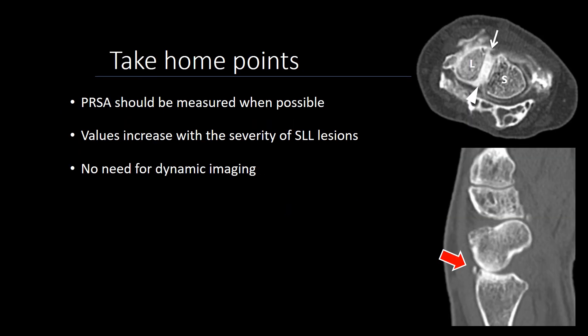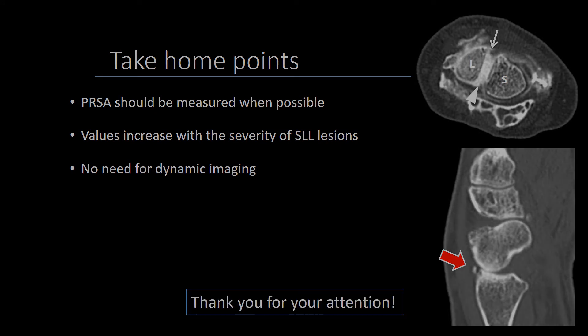Based on this data, we believe the posterior radial scaphoid angle should be measured whenever sectional imaging methods are used in the workup of patients with suspected scapholunate instability, particularly CT. The values of this angle increase with the severity of scapholunate ligament lesions. All these conclusions can be reached by looking at values obtained with the wrist in neutral position, so there is no actual need to perform dynamic imaging to evaluate the PRSA. These were the main conclusions of this article, and I thank you very much for your attention.